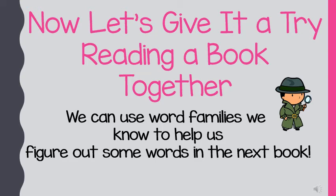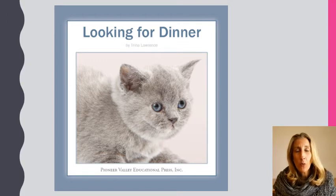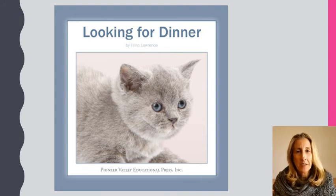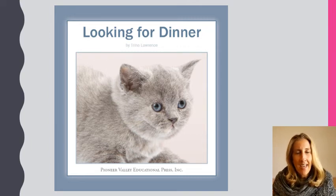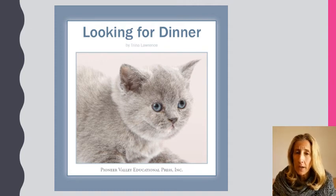Now let's give it a try reading a book together. We can use word families we know to help us figure out some words in the next book. Are you ready to give it a try with me? Let's get started. We're going to read a book called 'Looking for Dinner.' You can tell by looking at the cover there's a picture of a kitten. In this story, we're going to use our word families to help us, and if I get stuck on a word, I'll see if there's a word family I know in that word.